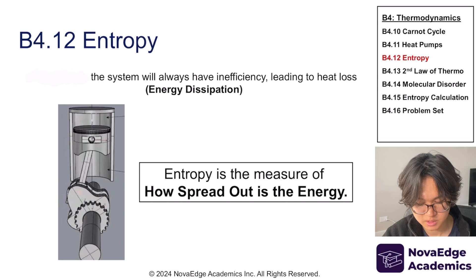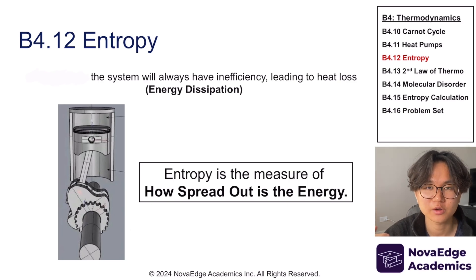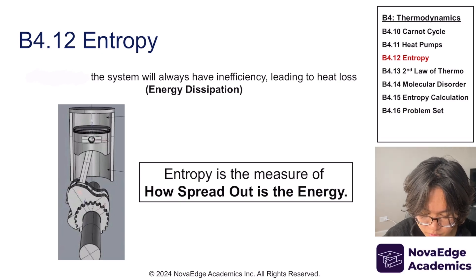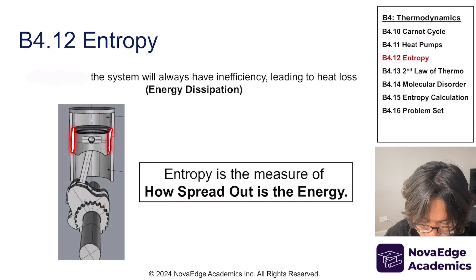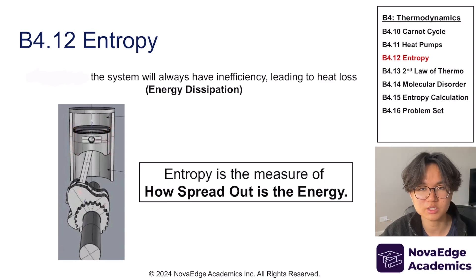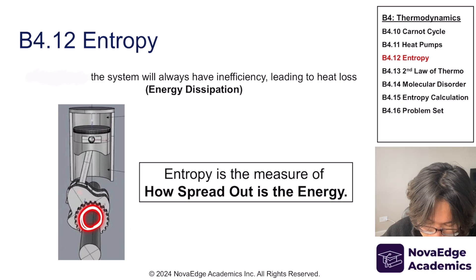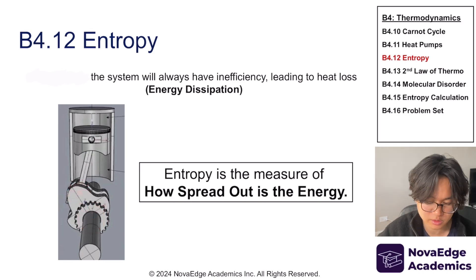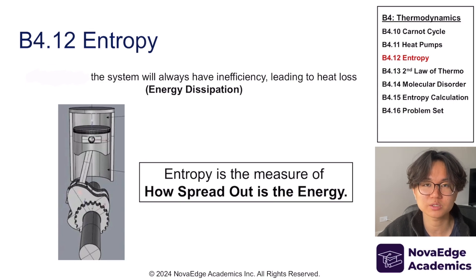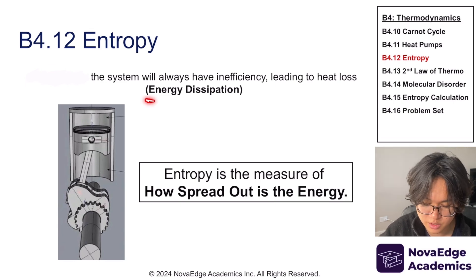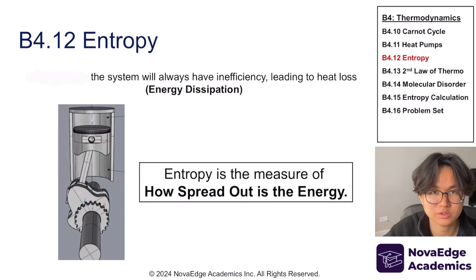Another reason you can never achieve Carnot efficiency in practice is because of inefficiencies that lead to heat loss and energy dissipation — friction, sound, and other losses. The Carnot cycle assumes a perfectly insulated system with no heat loss, no sound, no friction — which is impossible. In reality you always have friction from grinding, friction from turning, heat loss, and sound, so the process is always irreversible with wasted heat and energy dissipation.